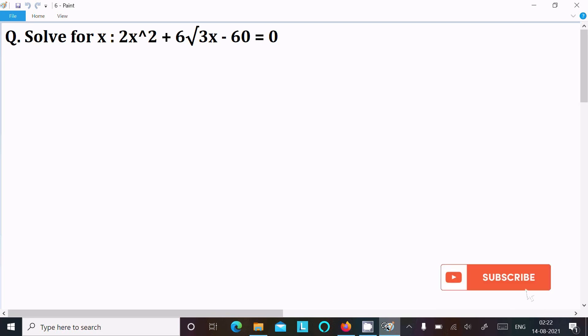Next, I am going to find the value of x for the given equation: 2x² + 6√3x - 60 = 0. So let's see the answer. First, I'm writing the given equation: 2x² + 6√3x - 60 = 0.